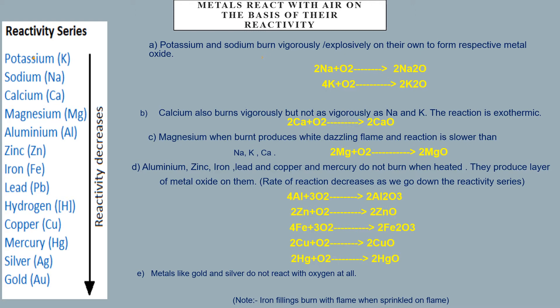Next, let us look at aluminium, zinc, iron, copper, and mercury. When they are kept on a flame, they do not burn. They react with oxygen but just produce a layer of their oxides — aluminium oxide, zinc oxide, iron oxide, copper oxide, and mercury oxide. As we go down the reactivity series, reactivity decreases. Metals higher in the reactivity series burn explosively, while metals lower in the series do not burn — they just form a layer of their oxides.